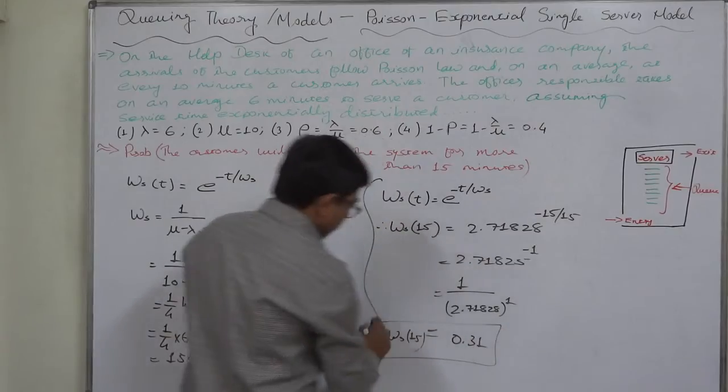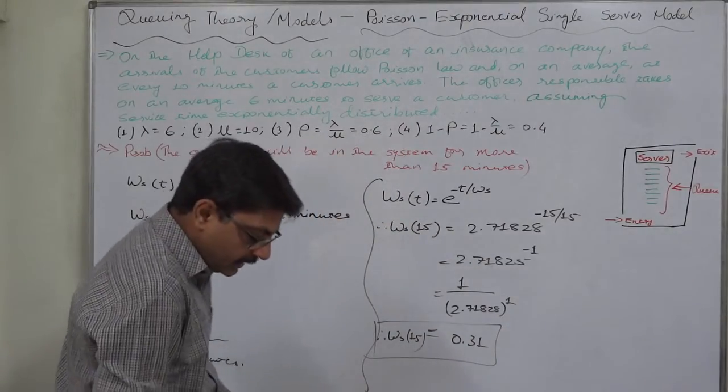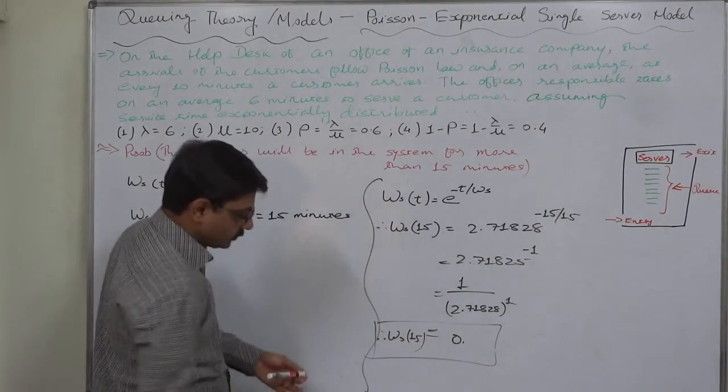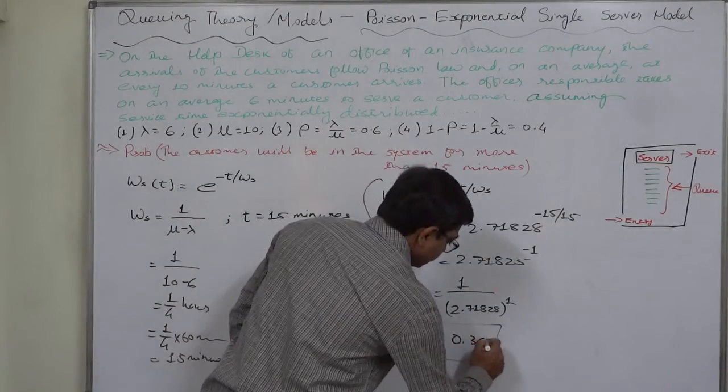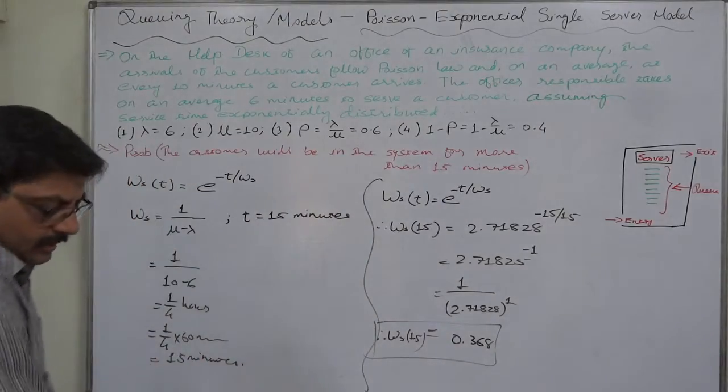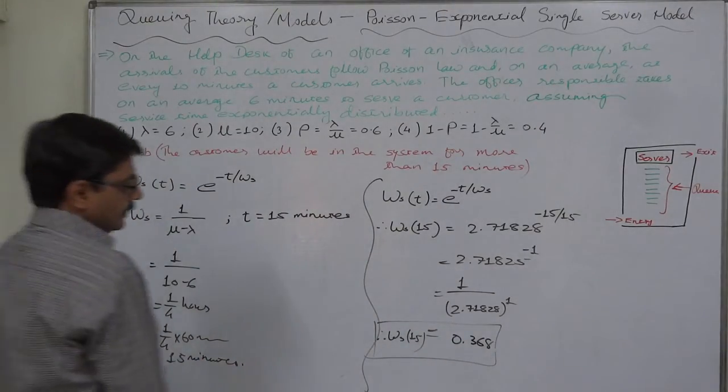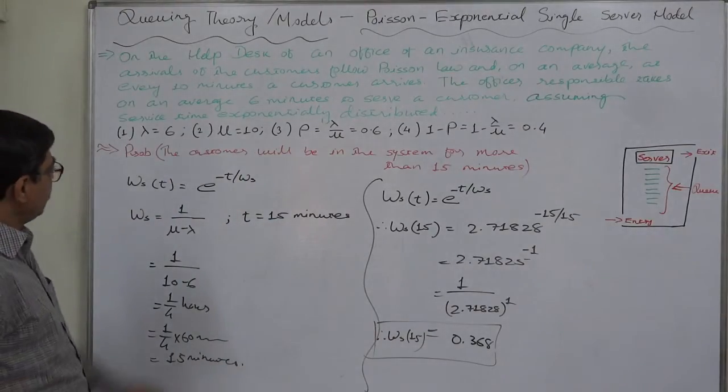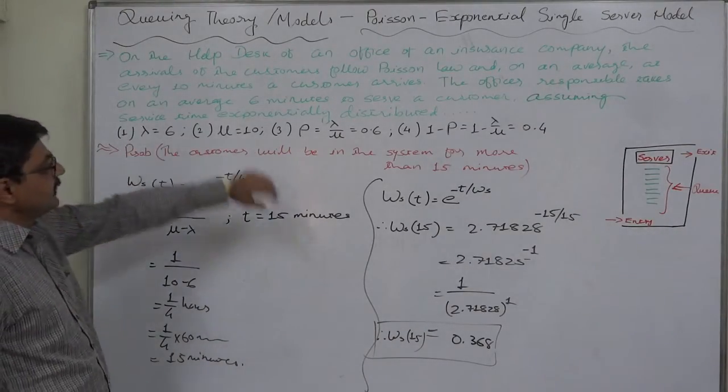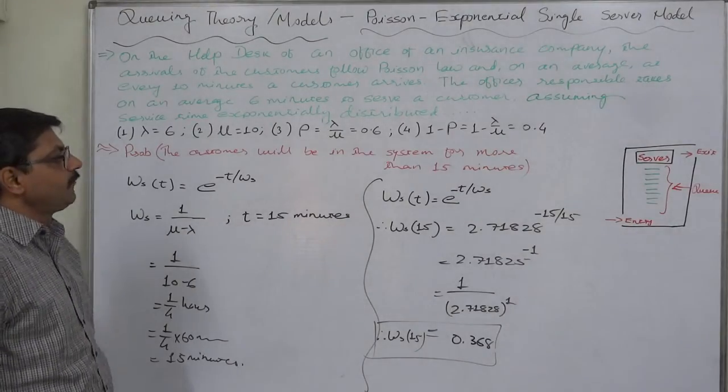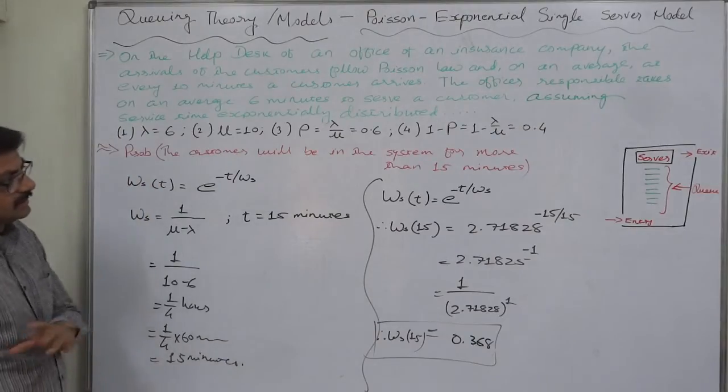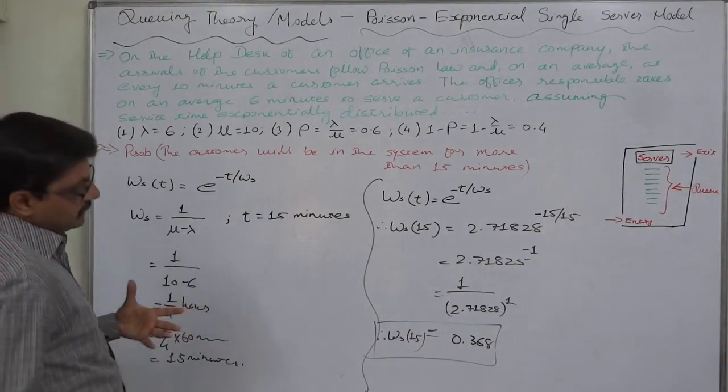So we can say that the probability—sorry, it is not 0.31, it is 0.368. 0.31 was the previous answer. 0.368, okay, it was my mistake in checking the rough work. Yes, so we can say that the probability that the customer will be in the system for more than 15 minutes is 0.368.